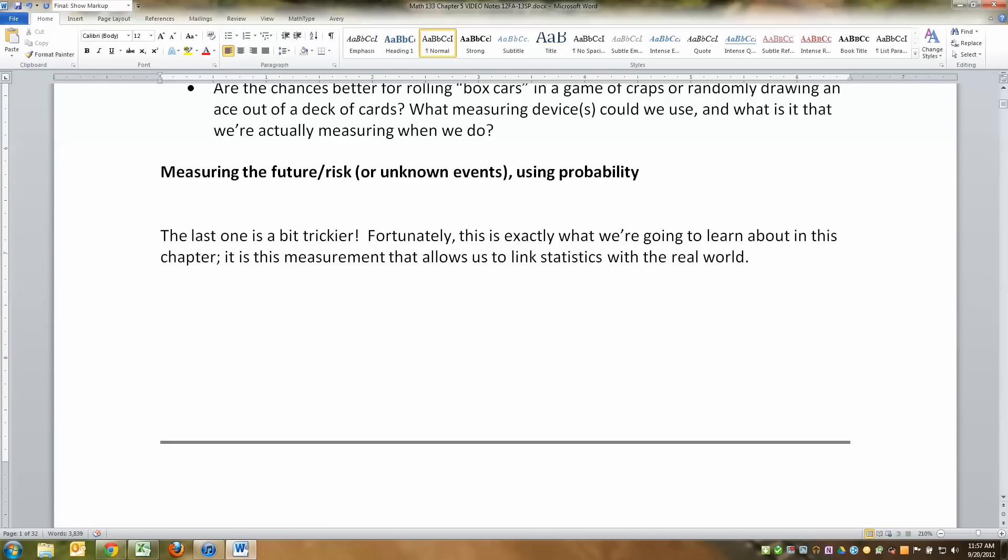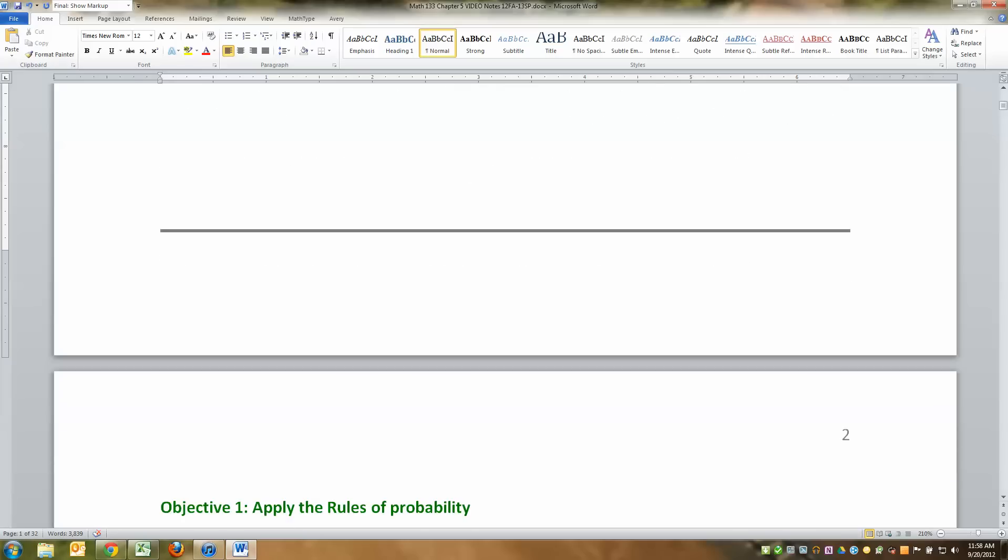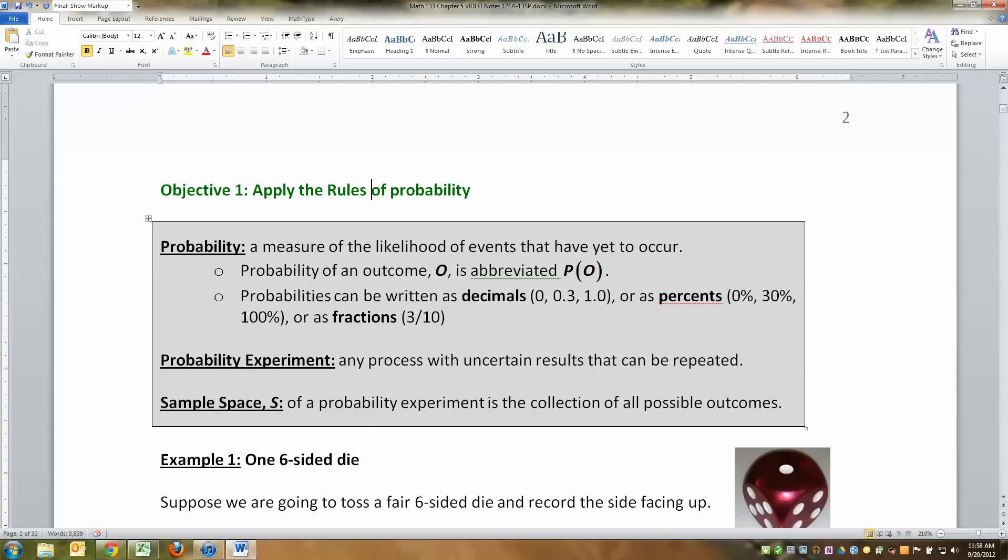I just want to mention this thing. It is the measurement that allows us to link statistics with the real world. The real world does not work perfectly. How does it work? Probability kind of sets that up for us. It's going to work, give or take. It's going to have a lot of wiggle to it, and probability is going to be our way of dealing with that wiggle. It's our way of measuring how much gray we have in our problems. And then we'll be able to take that gray that we'll have some numerical representation for with probability and use it to make inferences in the latter chapters.